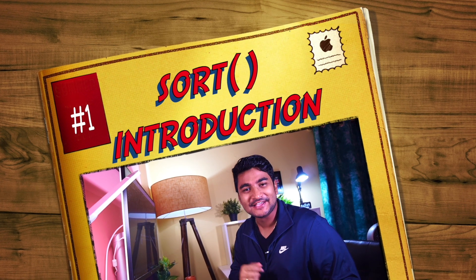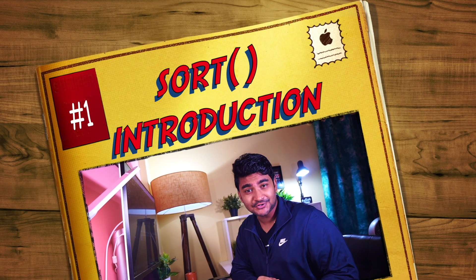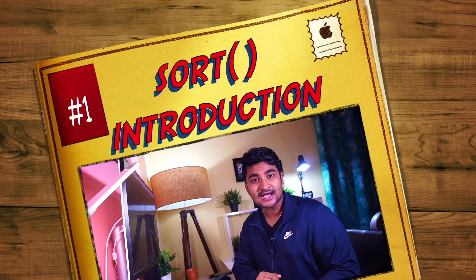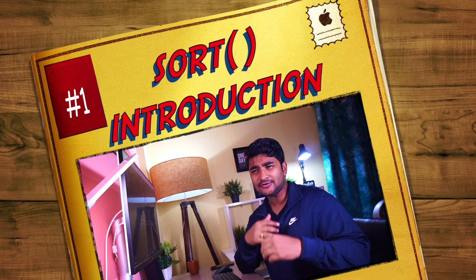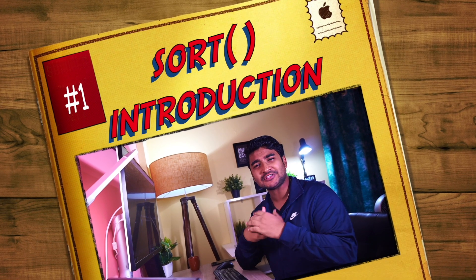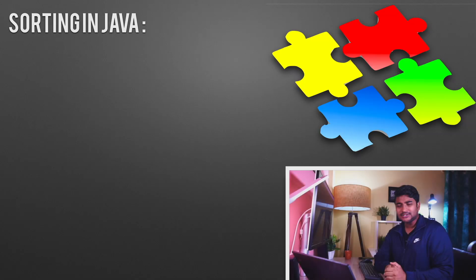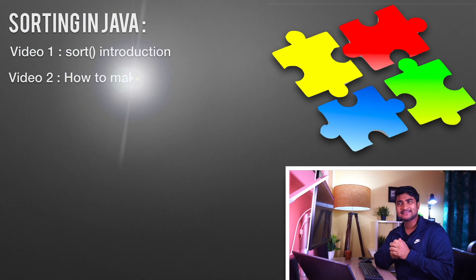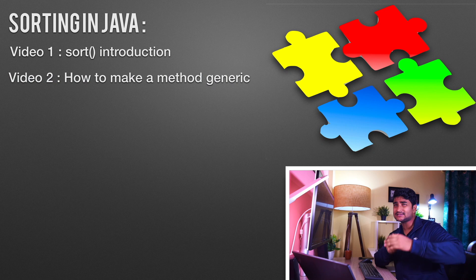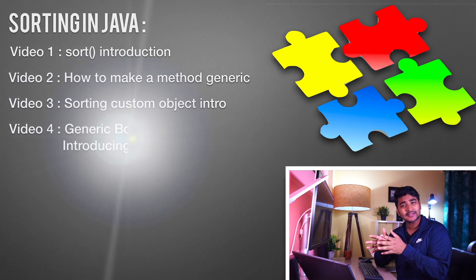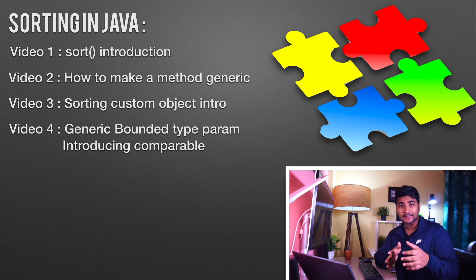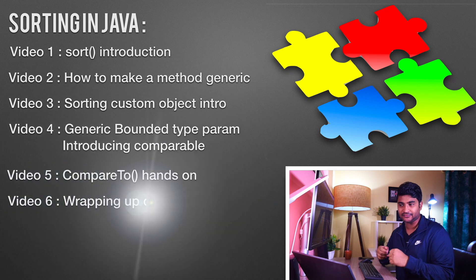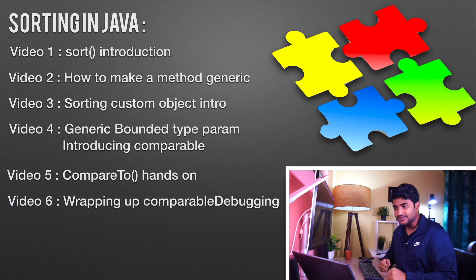Imagine you are in a Java interview and somebody asks you: can you tell me something about Java sorting — how are you actually going to sort things in Java? Whenever somebody asks you about sorting, it probably means the Collections class sort method, the Comparable interface, or the Comparator interface.